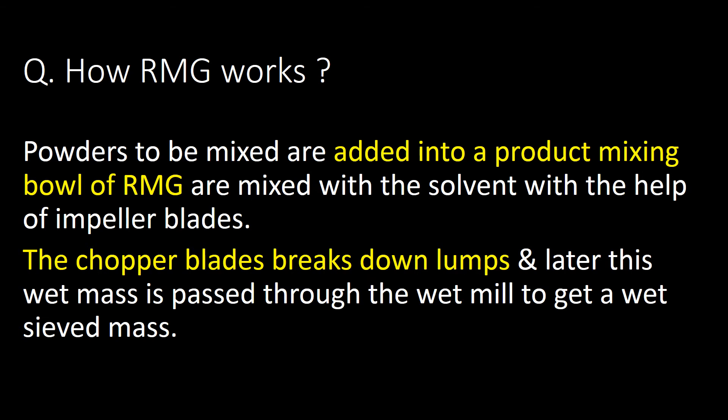How does RMG work? The powder to be mixed is added into the product mixing bowl of the RMG and mixed with the solvent using the impeller blades. The chopper blades break down lumps, and the wet mass is then passed through a wet mill to get a wet-sieved mass.